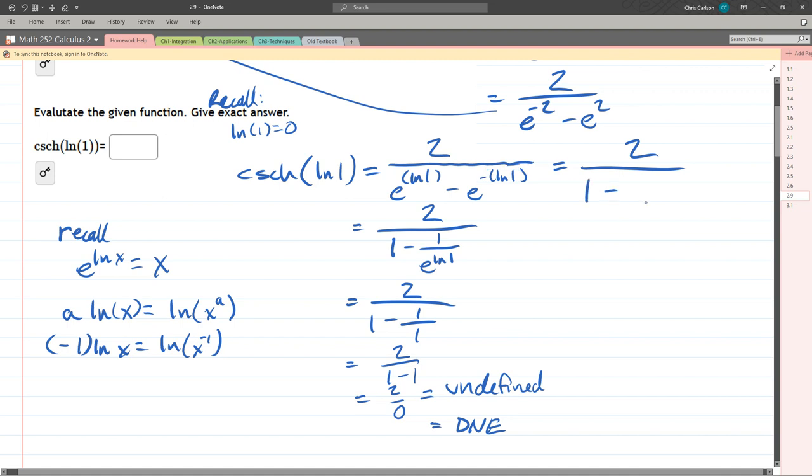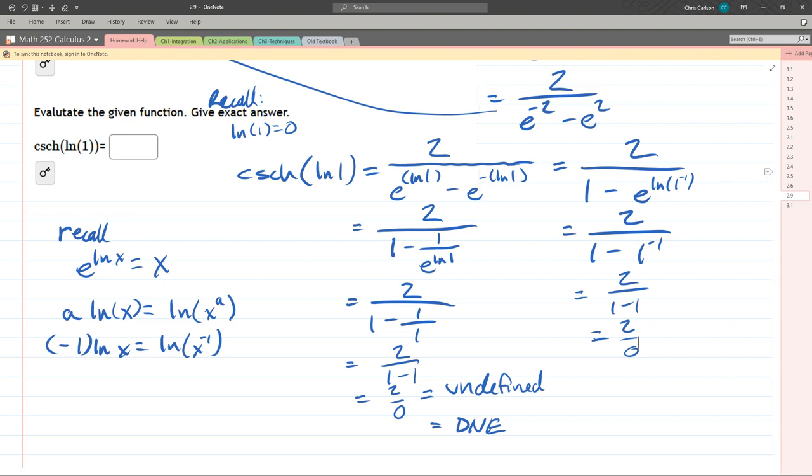So that first one reduces minus e^(ln(1^(-1))). 1 to the -1 power is 1. And e^ln cancels. 2 over 0, which of course still does not exist. All right, there we go.